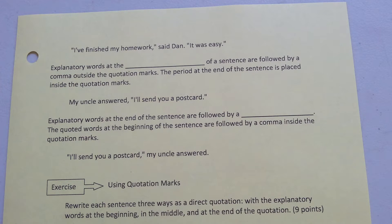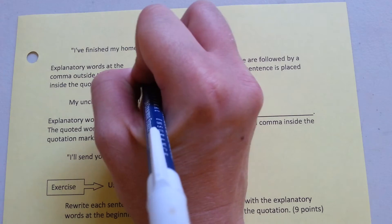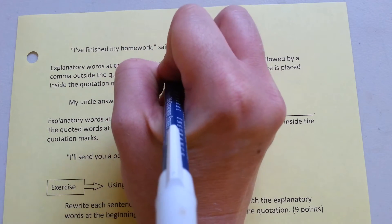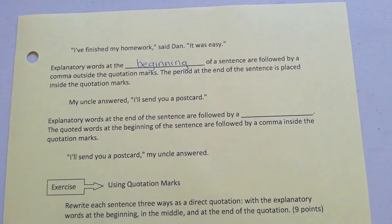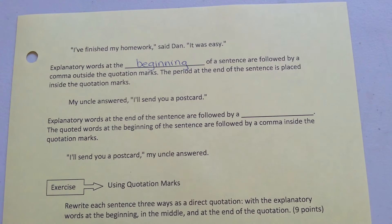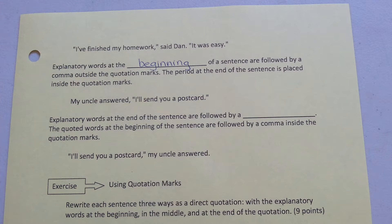Explanatory words at the beginning of a sentence are followed by a comma outside the quotation marks. The period at the end of the sentence is placed inside the quotation marks. For example: my uncle answered, "I'll send you a postcard."